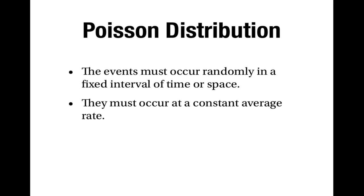Secondly, the events must occur at a constant average rate. What this means is that events are just as likely to happen in one part of the interval as they are in any other part. Or more precisely, if we divide the interval into equal sub-intervals, the number of events that you would expect to happen in each sub-interval is the same.